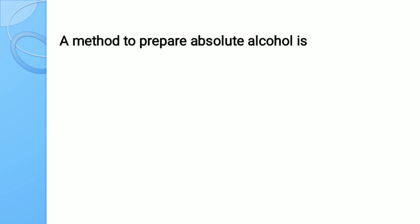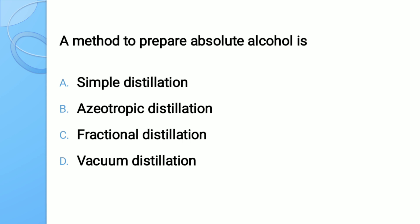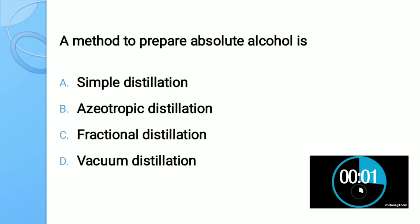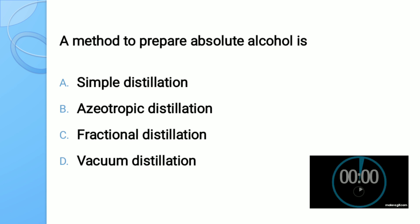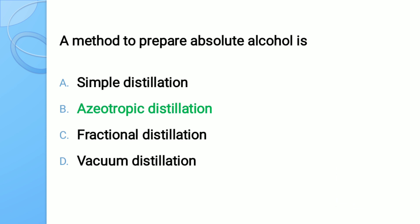Question number ten: A method to prepare absolute alcohol is — options: A) simple distillation, B) azeotropic distillation, C) fractional distillation, D) vacuum distillation. The correct answer is azeotropic distillation.